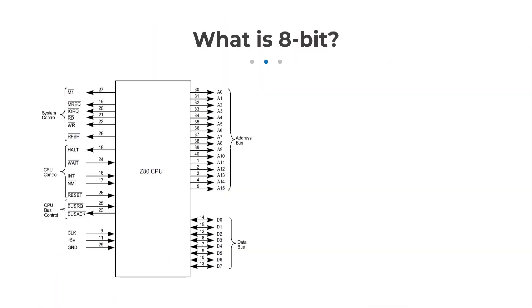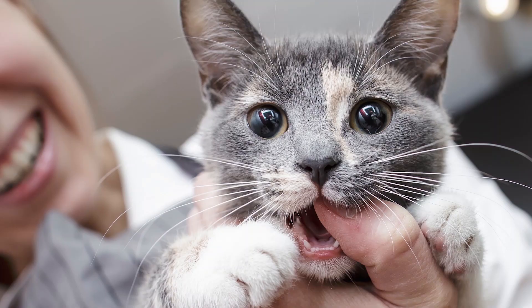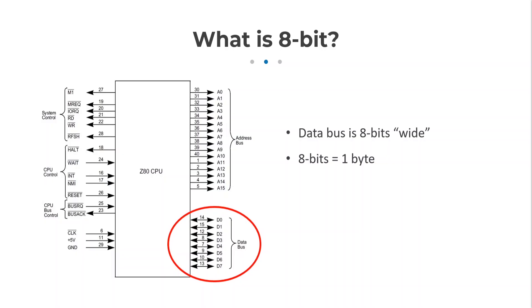What do I mean when I say that it's an 8-bit CPU? Well, its data bus is 8-bits wide — that's one byte. Fun fact: half a byte is called a nibble. You couldn't make this stuff up.